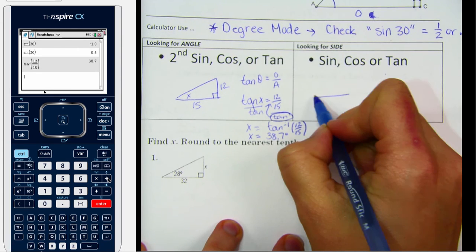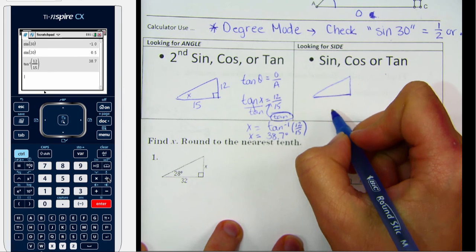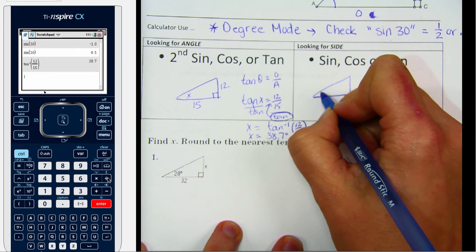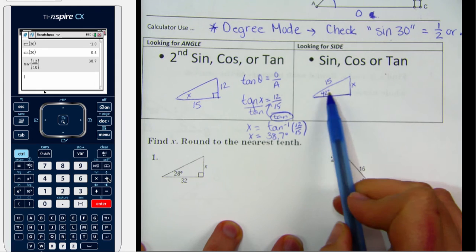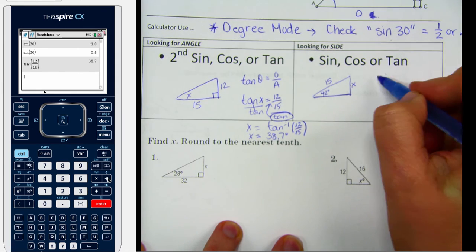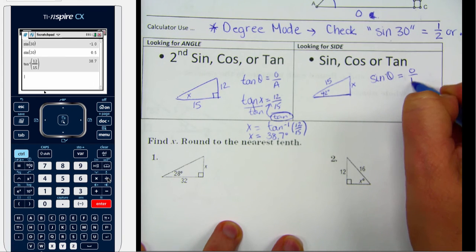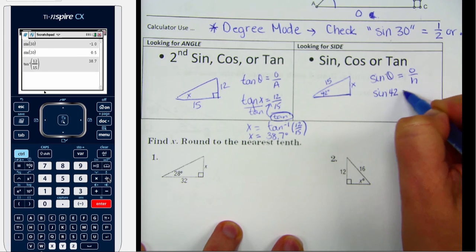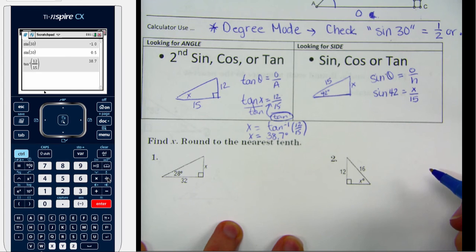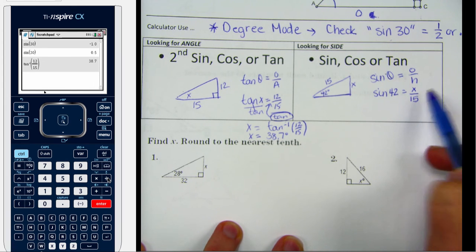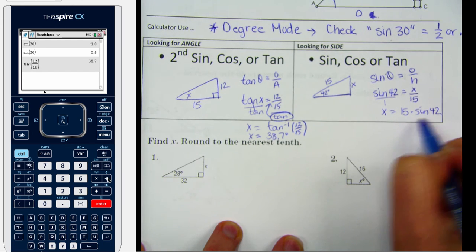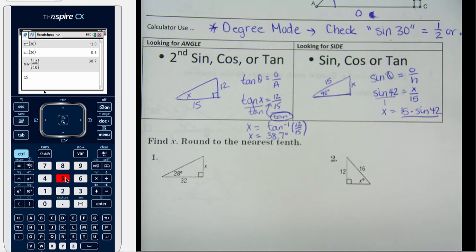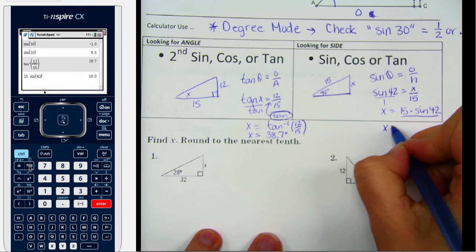If you're looking for a side, you use the regular sine, cosine, and tangent buttons. Let's say this angle is 42 degrees, the hypotenuse is 15, and we want to find the opposite side. Since I have opposite and hypotenuse, I use sine. Sine of 42 equals x over 15, so multiplying both sides by 15 gives x equals 15 times sine of 42. I type that into the calculator and get approximately 10 for that side.